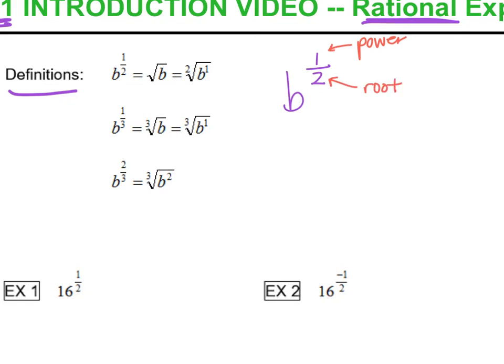So if we look at b to the one-half power, we can see that the power is 1, so b to the first power, and the root is 2, so taking a second root. You can also write that as the square root of b, because any time you take the square root, that is the second root. You can go ahead and write the 2 in there for your second root, and then here's your b to the first power. So it's like you take your fraction and you split it up. 1 is a power, 1 is a root.